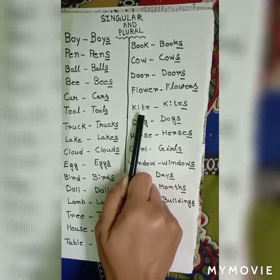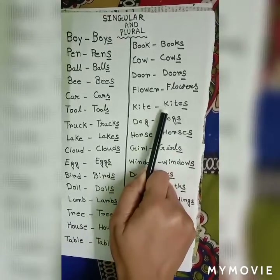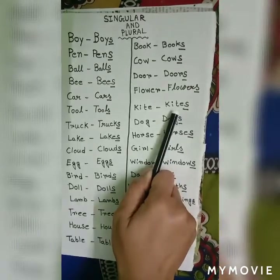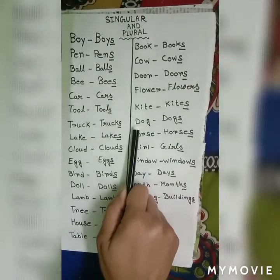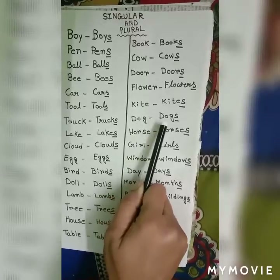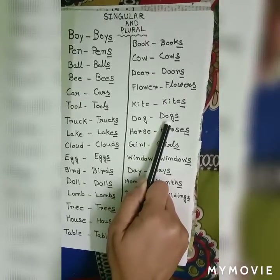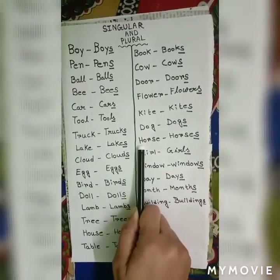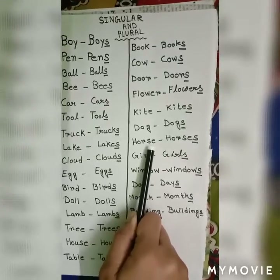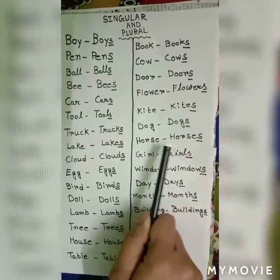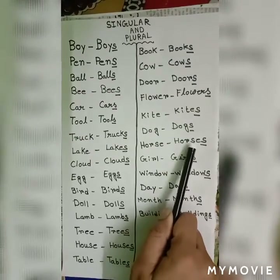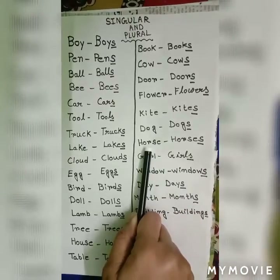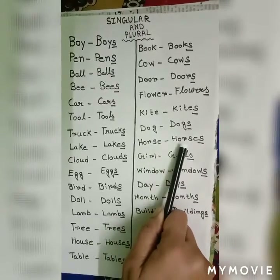K-i-t-e, kite — k-i-t-e-s, kites. D-o-g, dog — d-o-g-s, dogs. H-o-r-s-e, horse — h-o-r-s-e-s, horses. One horse, many horses.